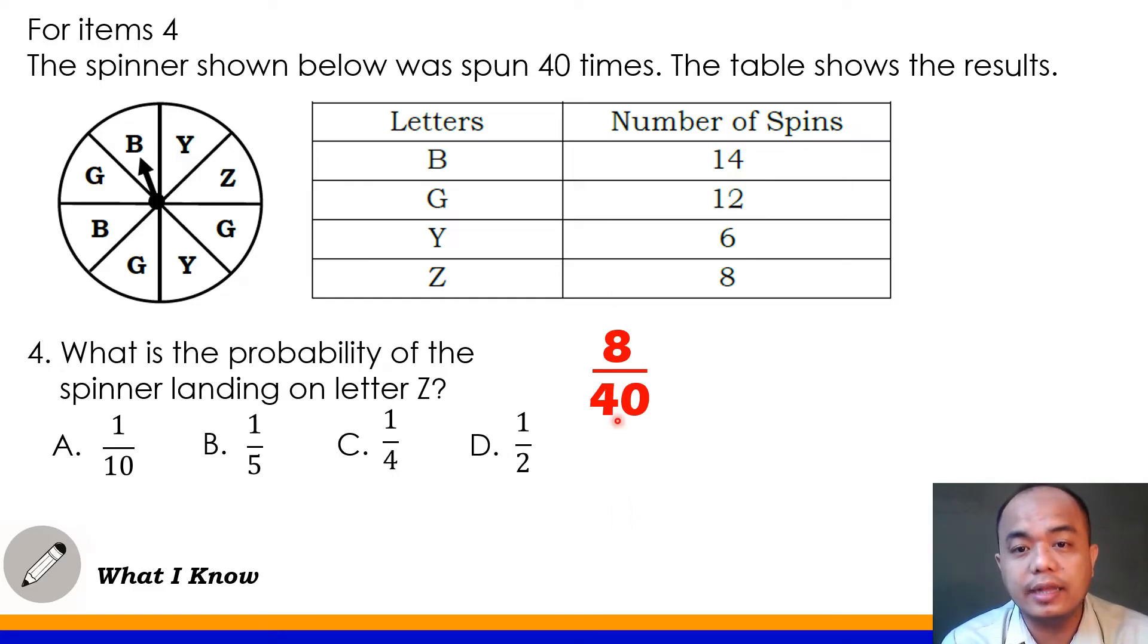Now, let us reduce this first. I-re-reduce muna natin ito. We will find the lowest term for this fraction. So how do we do that? So let us find out the lowest term of 8 over 40. So para gawin natin yan, we will find out first the GCF or the greatest common factor of 8 at saka 40. Ano ba yung pinakamalaking numbers na pwedeng makahati sa 8 at saka 40? Yes, very good. 8. Yung 8 ang ating GCF o yung pinakamalaking number na pwede natin gawing divisor sa 8 at saka 40. So ang gagawin natin, i-divide natin yan sa 8. Yung numerator natin at saka denominator. Now 8 divided by 8 is 1 and 40 divided by 8 is 5. So ibig sabihin, 1 fifth ang sagot sa number 4 or letter B. So the probability of the spinner landing on letter Z would be 1 fifth.